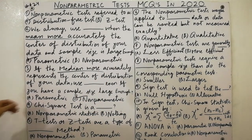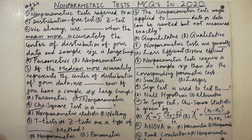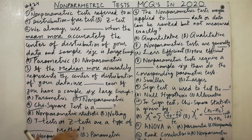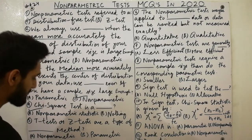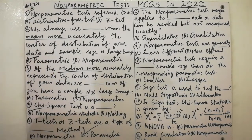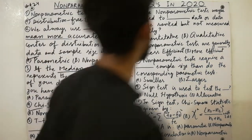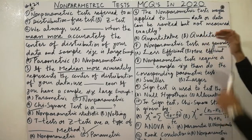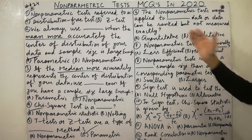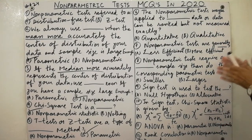The chi-square test is a non-parametric statistic. The t-test and z-test, based on the t-distribution or z-distribution, are a type of parametric test. Must remember: both the t-test and z-test are parametric.